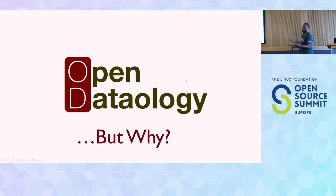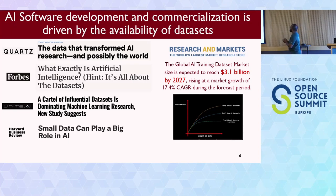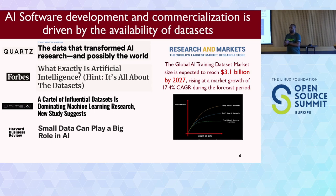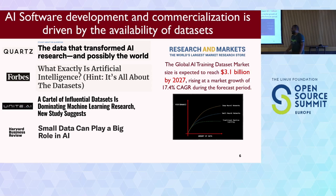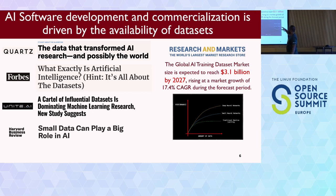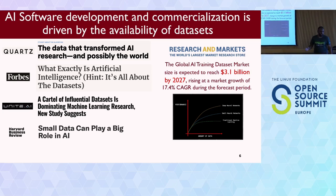But why should you care? I'm going to convince you over the next 20 odd minutes. Software ate the world - past tense. AI is eating the world - present tense. And this whole revolution is fueled by the availability of massive amounts of data. It's a huge market, as you can see from news articles and research. When deep learning started becoming popular, the performance of deep learners was purely attributed to the availability of large swaths of data and almost nothing else.